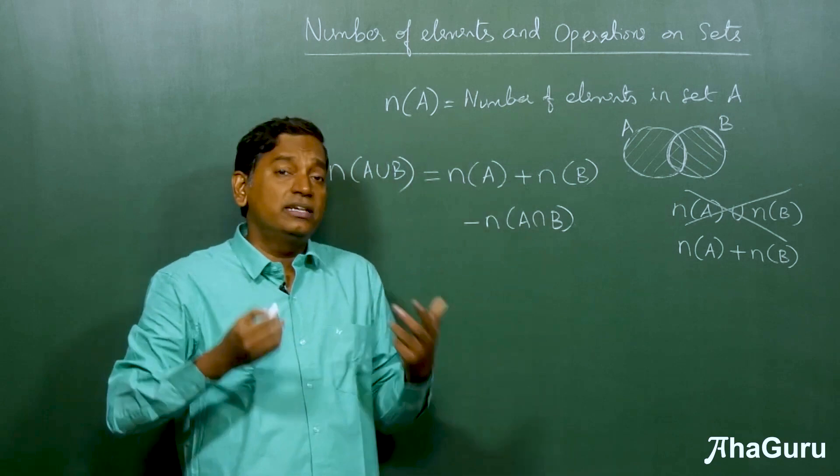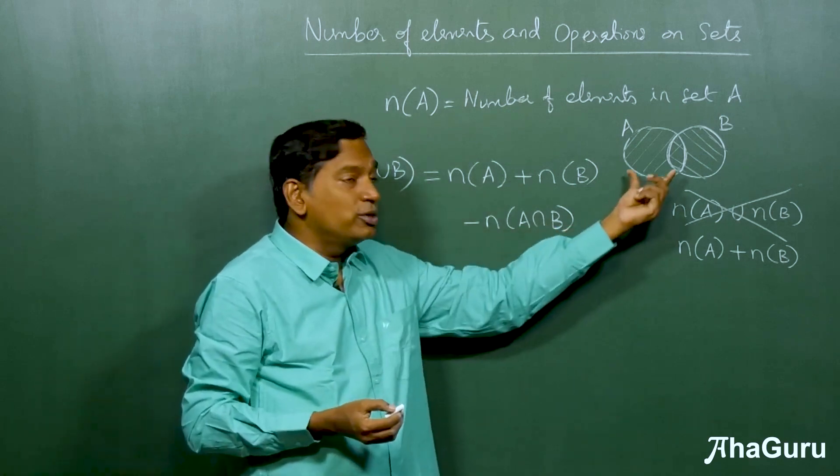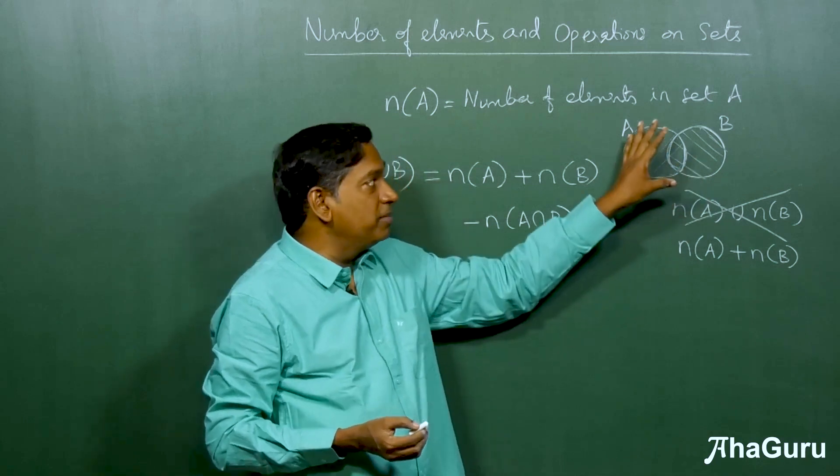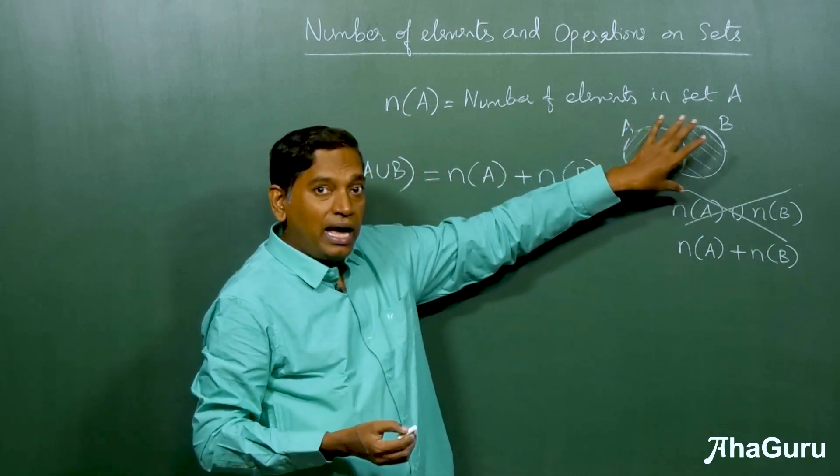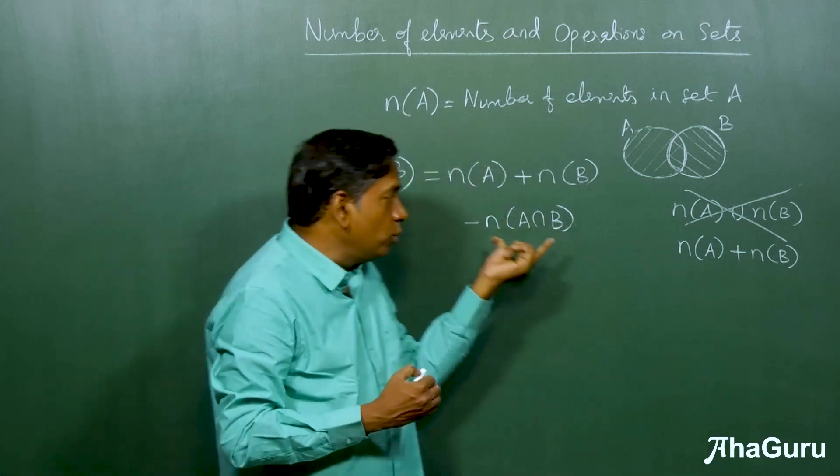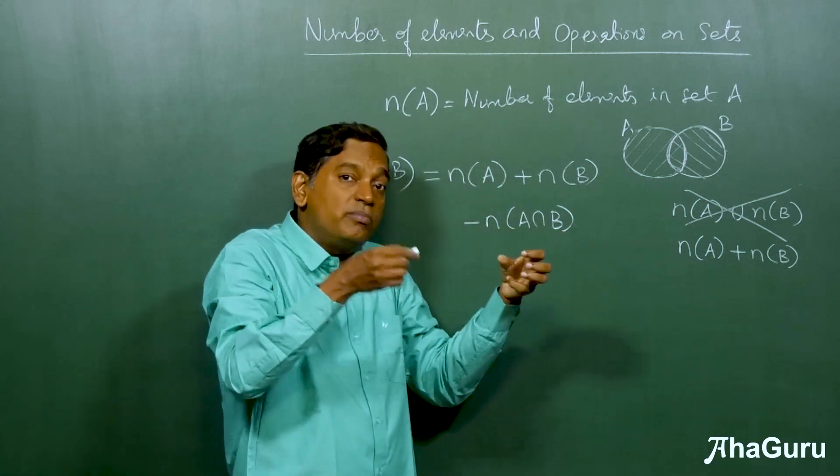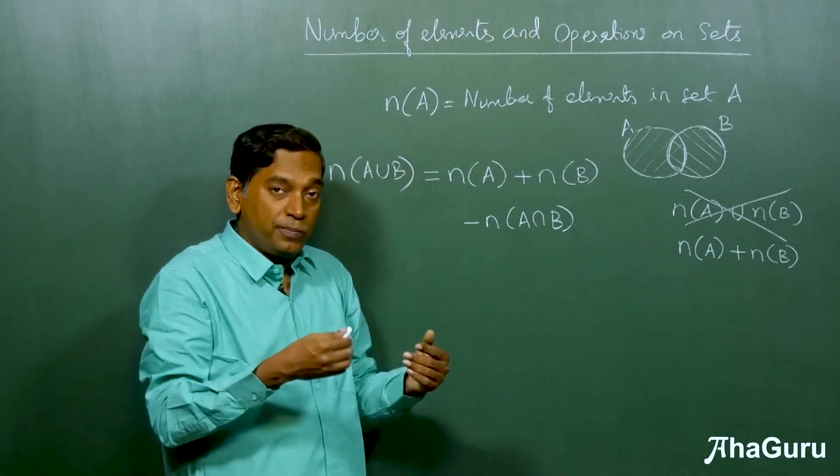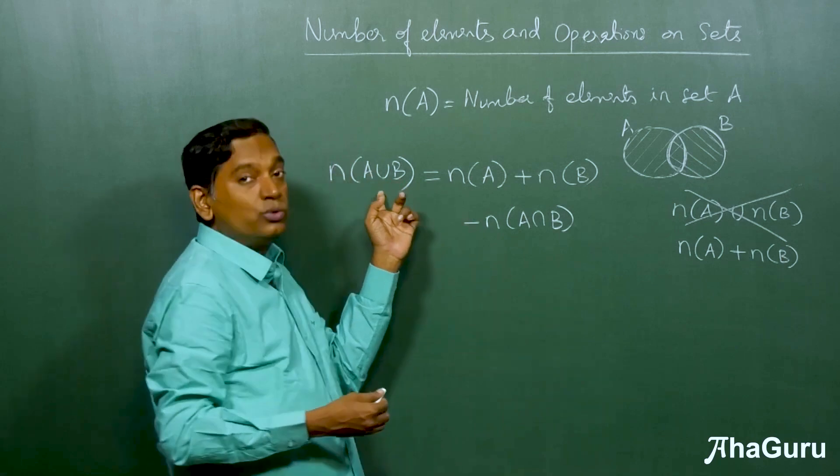Now what is n(A intersection B)? We don't know. That has to be told separately. In a particular problem, if you are told what is n(A) and n(B), you can't find n(A union B). You need to know what is n(A intersection B). What is common between the two sets? That number you must know. If you know that, then you can find the union.